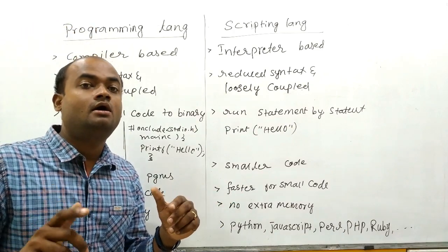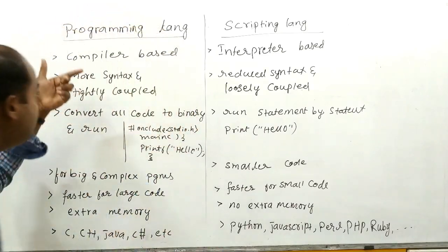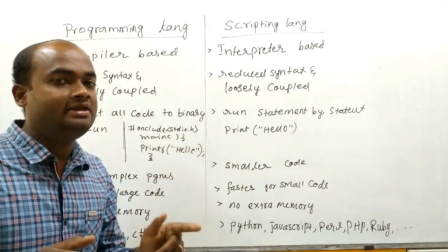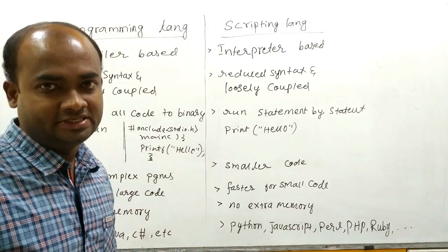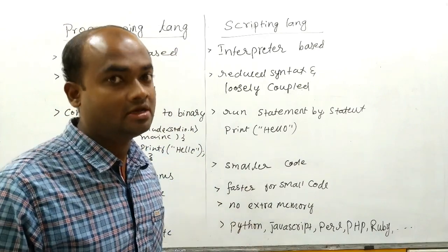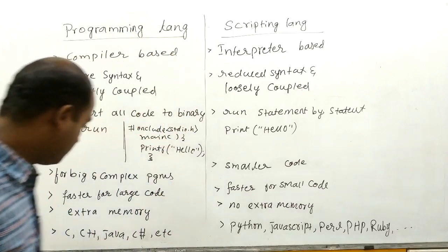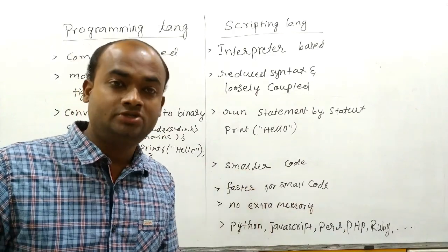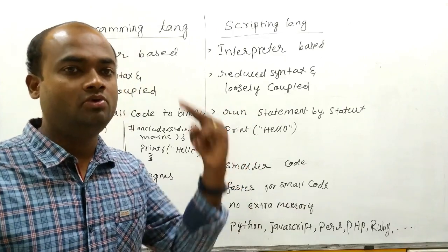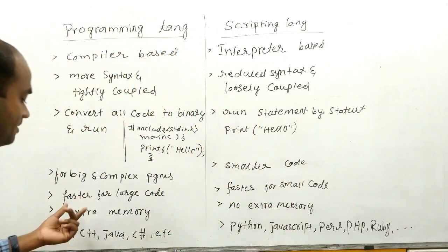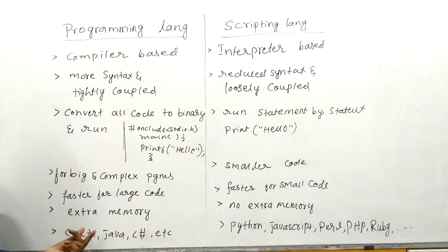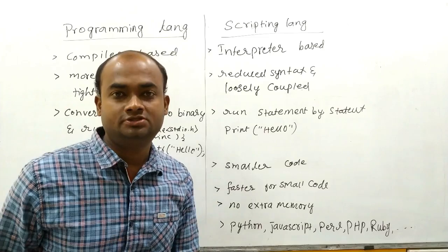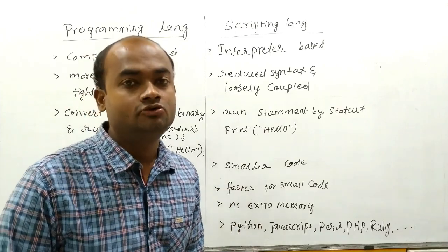The speed of code running is faster in programming languages when the code size is big. When your code size is smaller, scripting languages are actually faster than programming languages. In programming languages, the compiler generates an extra binary file, so you have two files: the source code and the binary file. This means more memory is used. In scripting languages, no intermediate binary file is generated, so the memory consumed is less.